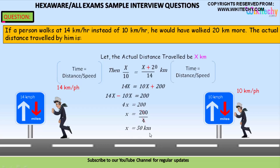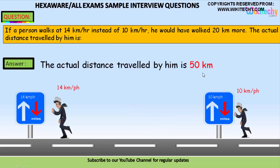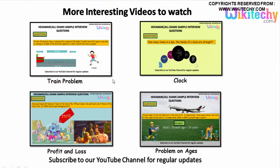The value of x is 50 kilometers — that is the actual distance traveled. We can verify: 50 divided by 10 is 5, and 50 plus 20 divided by 14 is 70/14, which is also 5. The same time confirms our answer. So the final answer is 50 kilometers.